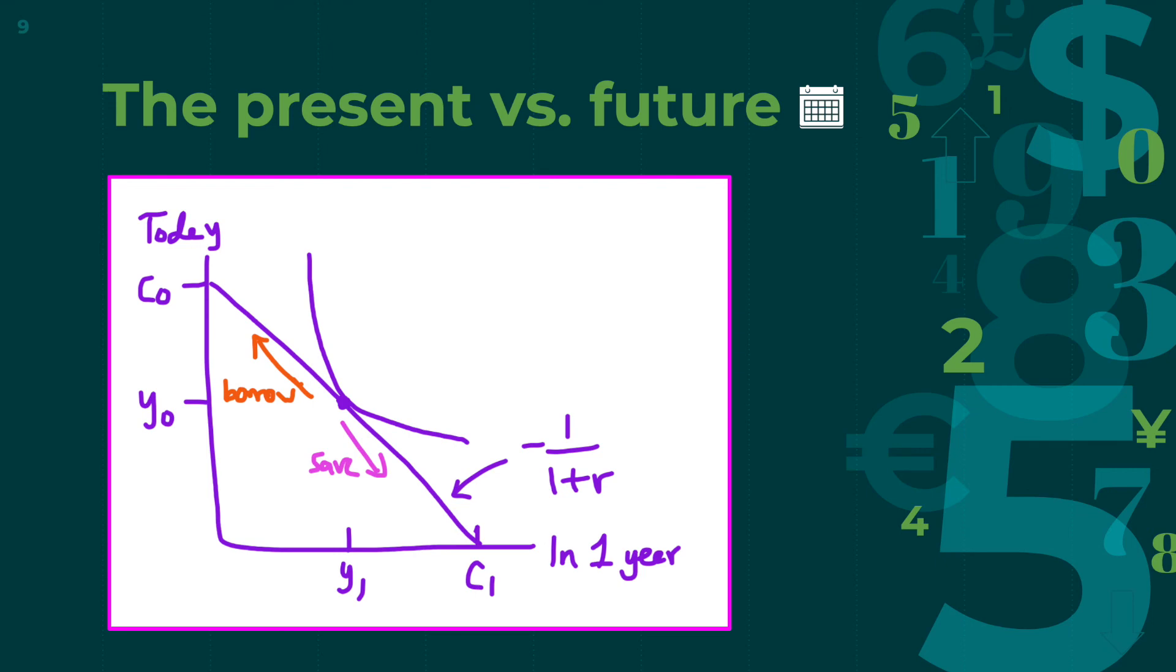From this info, we can draw a graph of today's income and consumption versus next year's income and consumption, and connect the axes with a line of slope negative 1 over 1 plus R, representing the interest rate for borrowing and saving, which allows us to consume more than our current or future income by borrowing or saving. We can also draw an indifference curve tangent to this line, depending on whether we want to borrow and consume more today, or save and consume more next year.